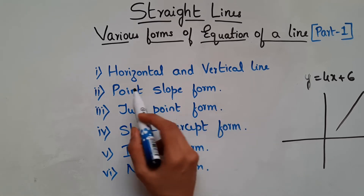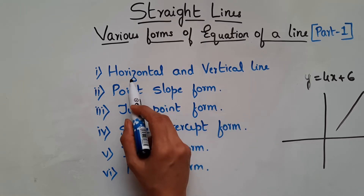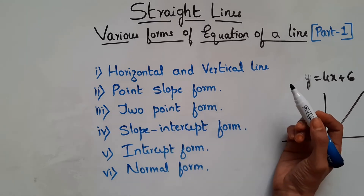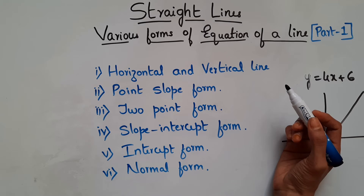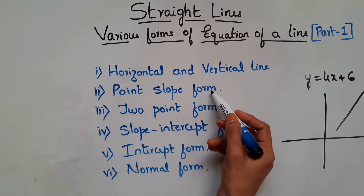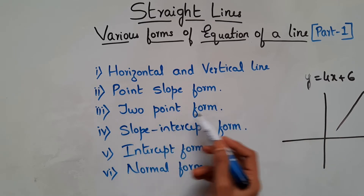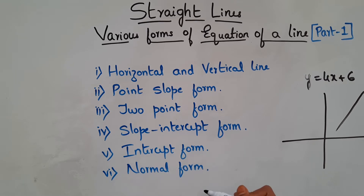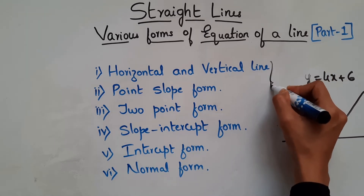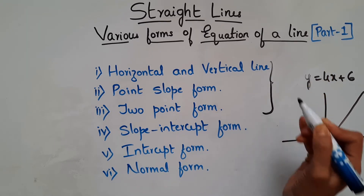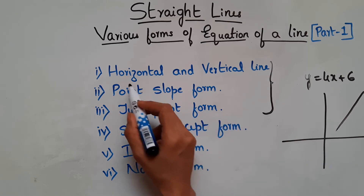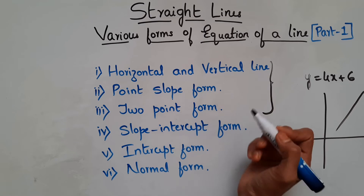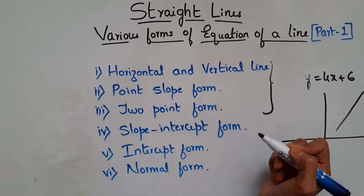For different conditions of a line, we have different formulas to find the equation of that line. The different conditions are: the line may be horizontal or vertical, and we have point-slope form, two-point form, slope-intercept form, intercept form, and normal form. In this video, we will see the first three.